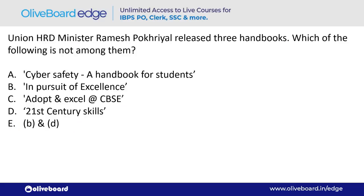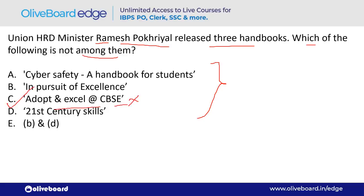Union HRD Minister Ramesh Pokhriyal released three handbooks. Which of the following is NOT among them? Option C — 'Adopt and Excel as CBSE' — is not one of them. The three handbooks released are: Cyber Safety, A Handbook for Students, and In Pursuit of Excellence: 21st Century Skills.